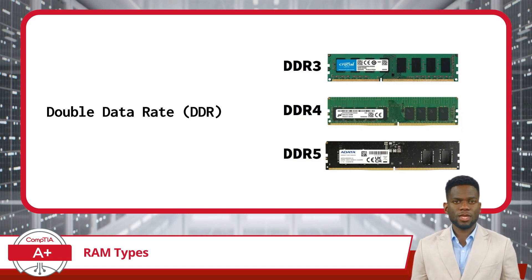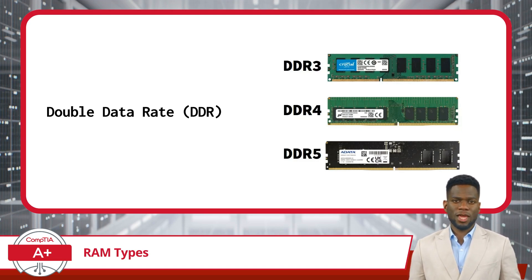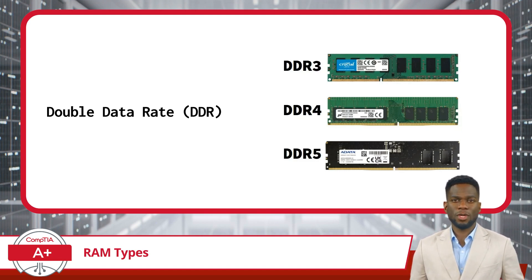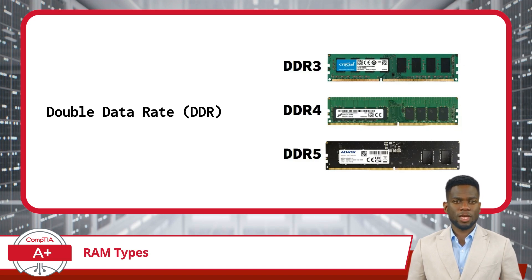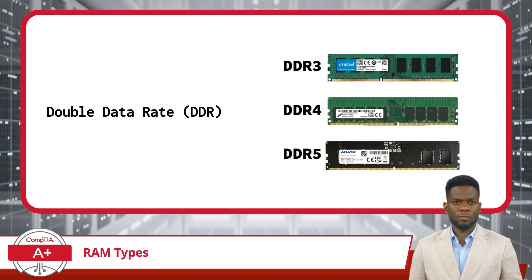DDR5 RAM started to appear in the market around 2020, taking this evolution further. It promises even higher speeds, greater bandwidth, and improved power efficiency. DDR5 represents the future of memory technology, shaping the landscape of modern computing, at least for now.